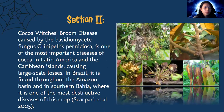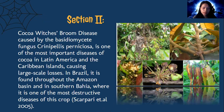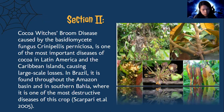Why is it important that we learn about Witch's Broom disease? Cocoa Witch's Broom disease, caused by the basidiomycete fungus Crinipellis perniciosa, is one of the most important diseases of cocoa in Latin America and the Caribbean islands, causing large-scale losses. In Brazil, it is found throughout the Amazon basin and in southern Bahia, where it is one of the most destructive diseases of this crop. In the 1980s, the disease devastated Brazil's cocoa production, wiping out whole farms.